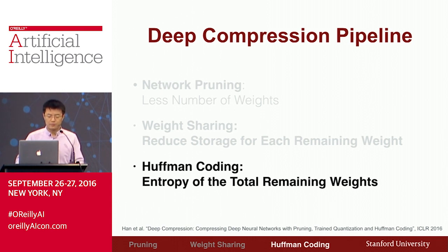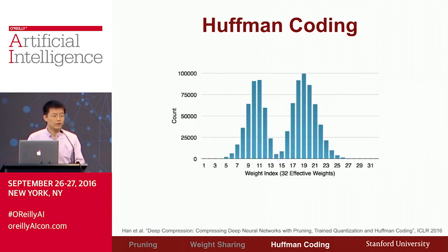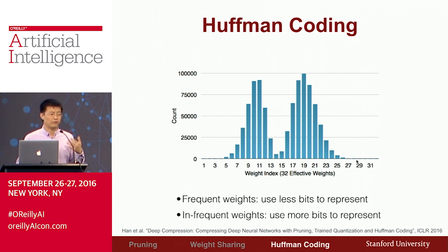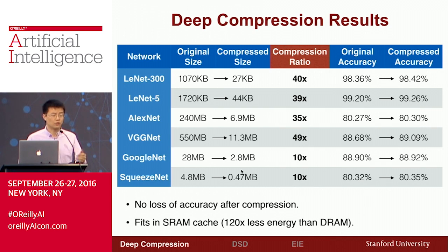The last step of the pipeline is Huffman coding. After quantization, weights become discrete and choose from certain values. Huffman coding uses fewer bits to represent frequently appearing weights and more bits for less frequent ones, so the final representation approaches the entropy of the remaining weights. By combining all three stages together, we compress state-of-the-art deep neural networks from 10 times to 49 times with no loss of accuracy on ImageNet.